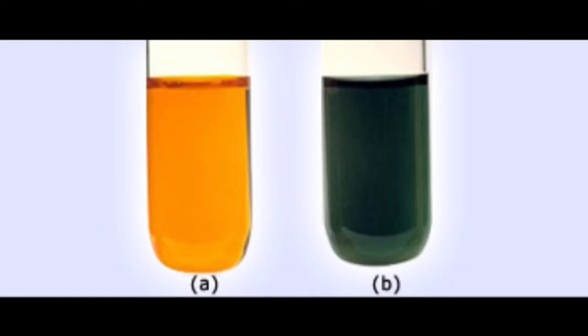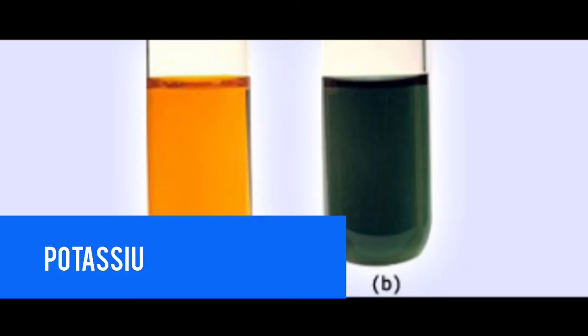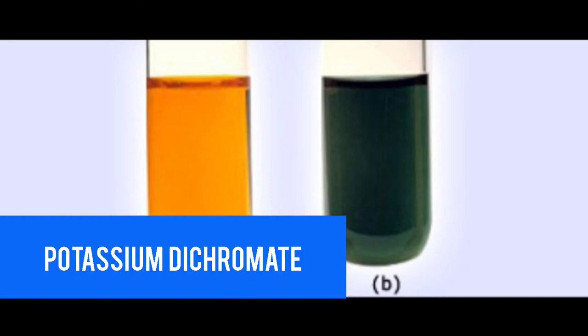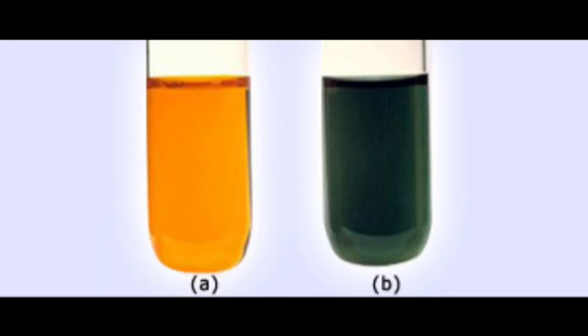Another characteristic is change in color. When reactants react, they can change color. For example, when we pass sulfur dioxide gas through potassium dichromate solution, the color of potassium dichromate, which was originally orange, will change from orange to a different color.